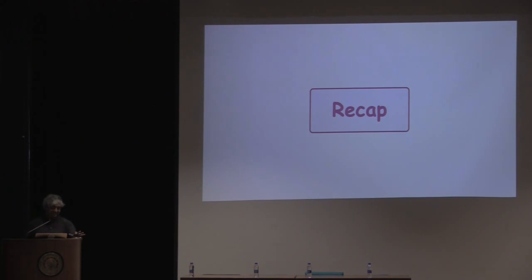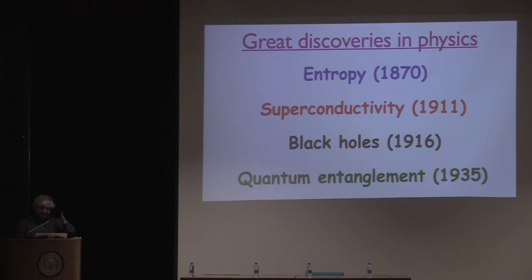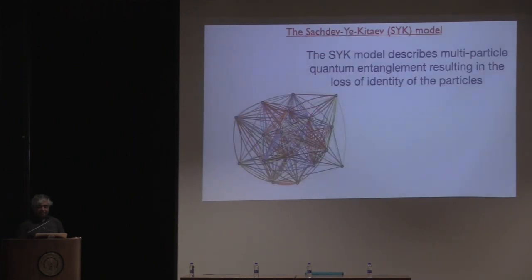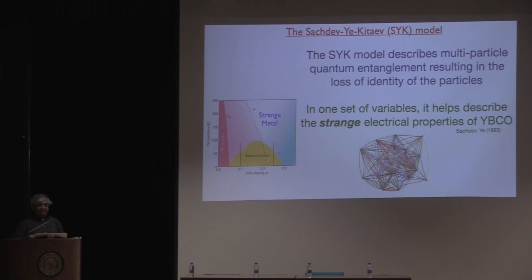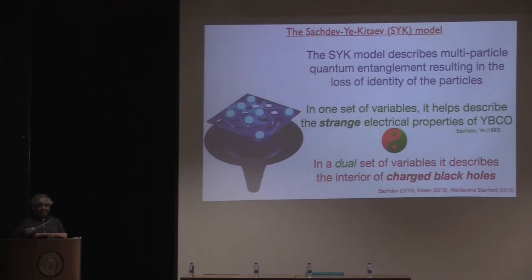To recap the basic ideas: quantum entanglement in many faces. One of its faces is in the SYK model, and that seems to be the key to understanding superconductivity and basic properties of black holes. It is a kind of entanglement where there is a total loss of identity of the particles. In one set of variables, this is crucial to describing the strange electrical properties of YBCO; and in what's called a dual set of variables, it describes the interior of charged black holes. Thank you.